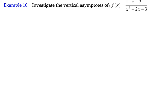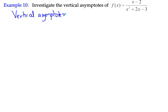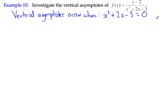Example 10: investigate the vertical asymptotes of the function f(x) equals (x minus 2) over (x squared plus 2x minus 3). The vertical asymptotes will occur when the denominator equals 0, that is when x squared plus 2x minus 3 equals 0.